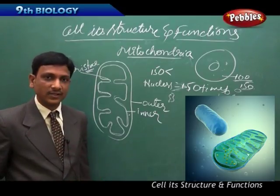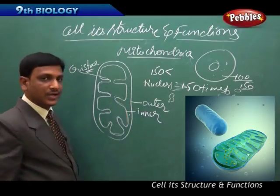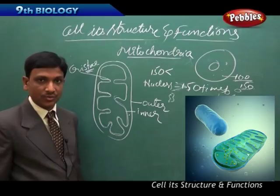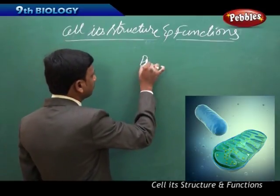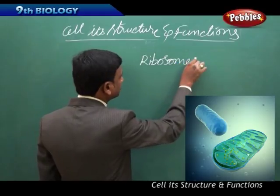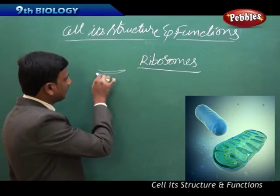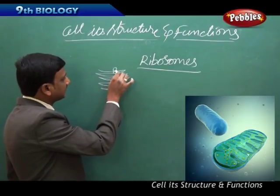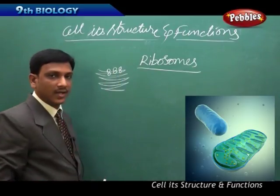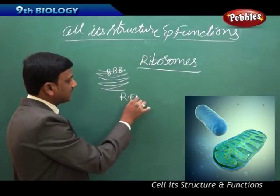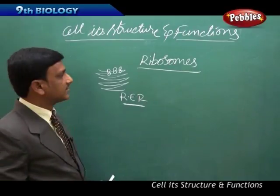The function of the mitochondria is cellular respiration, which takes place inside the mitochondria to release energy in the form of ATP. Now, we are going to discuss about ribosomes. We already studied about ribosomes when studying the endoplasmic reticulum. The endoplasmic reticulum provides the surface for protein synthesis, and the ribosomes — found on the rough endoplasmic reticulum, attached to its membranes — are what carry out that process of protein synthesis.